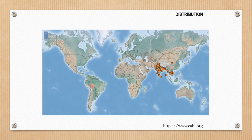Where is Hieroglyphus banian found? Its distribution is mainly restricted to Southeast Asia. The countries in Southeast Asia which are known for rice cultivation also see this pest, Hieroglyphus banian.